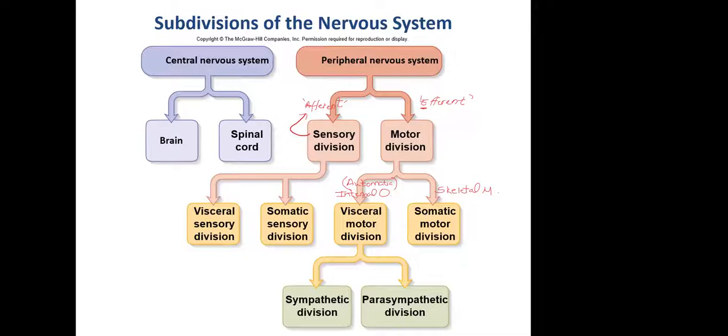The visceral motor division, this automatic response, can either increase or decrease. The sympathetic nervous system is flight or fight and the parasympathetic nervous system is rest and digest or rest and relax. You start to see a little bit of complexity out of the peripheral nervous system.